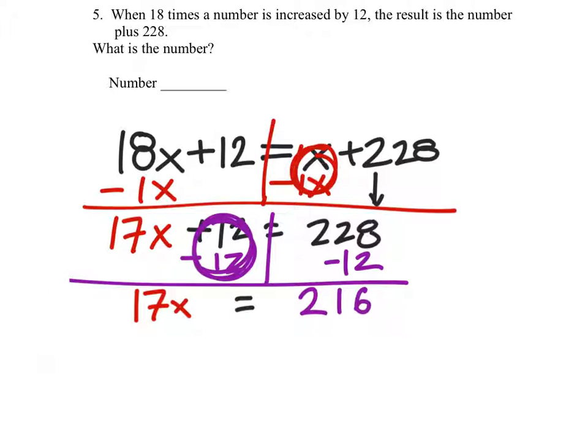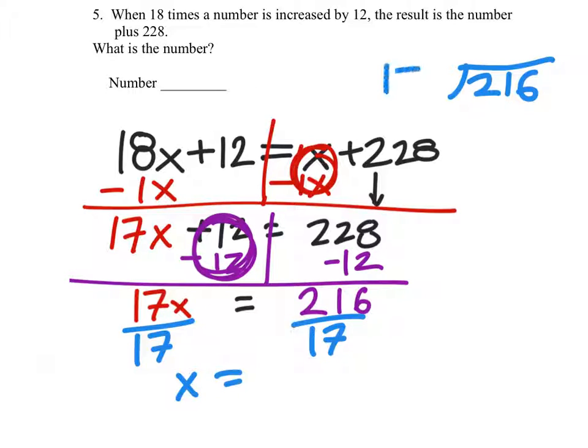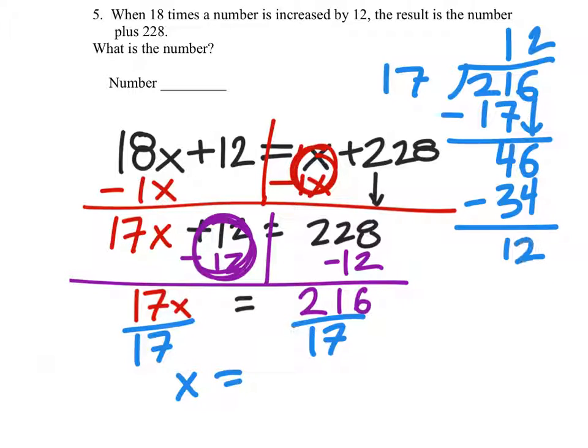All right, to solve this one, we'll divide both sides by 17. And we get x equals, let's see, 216 divided by 17. 17 will go into 21 once. So when we subtract, we get a 4. We'll drop the 6. 17 will go into 46 twice, two times. So 2 times 17 is 34. When we subtract this, we get 12. And we could say we've got 12 17ths remaining. So the mixed number here is okay.